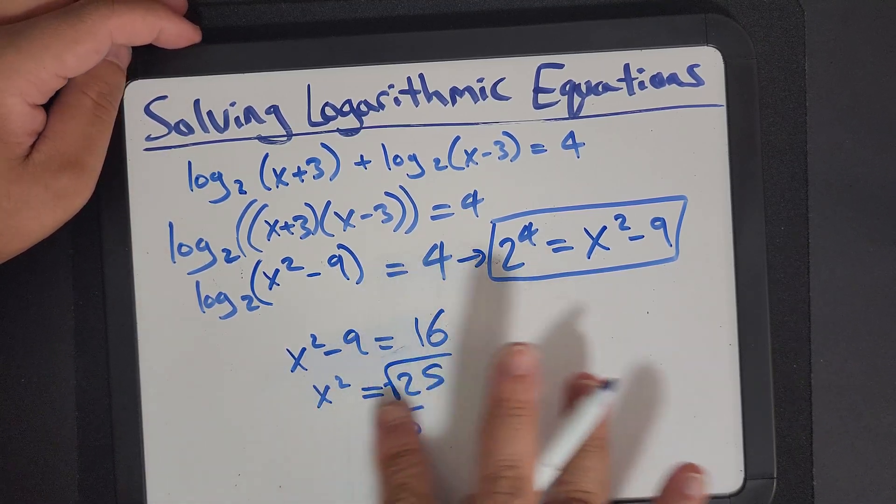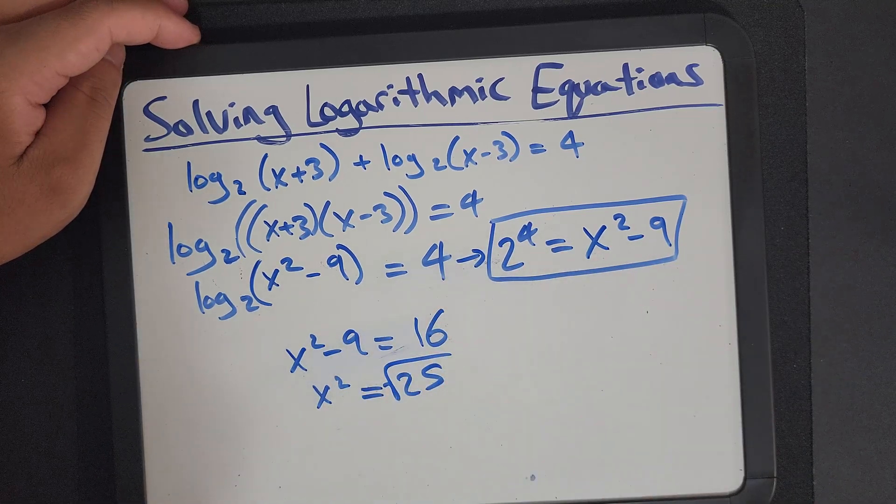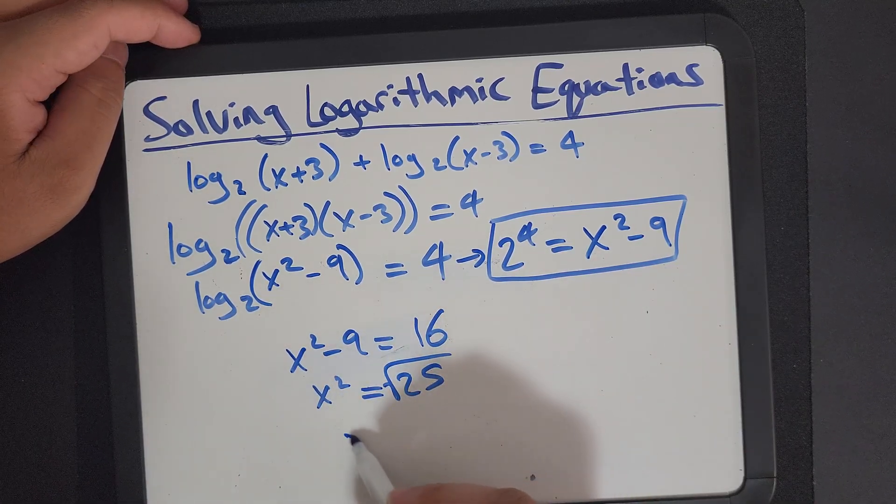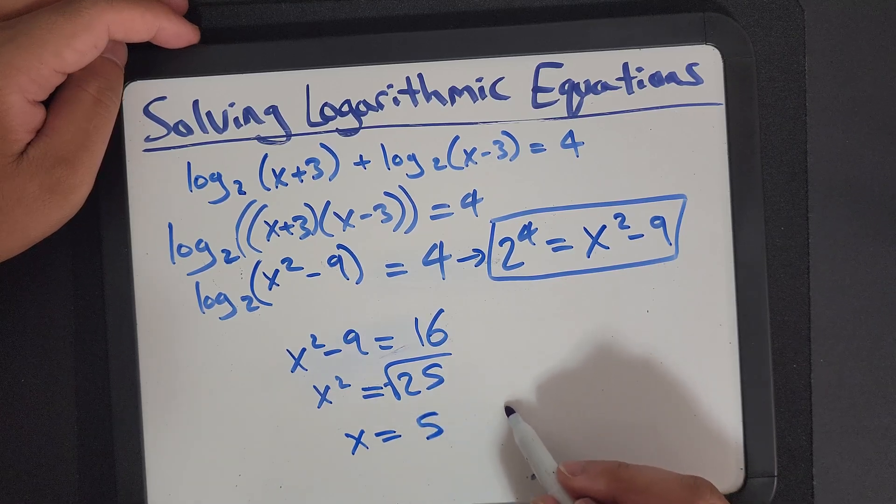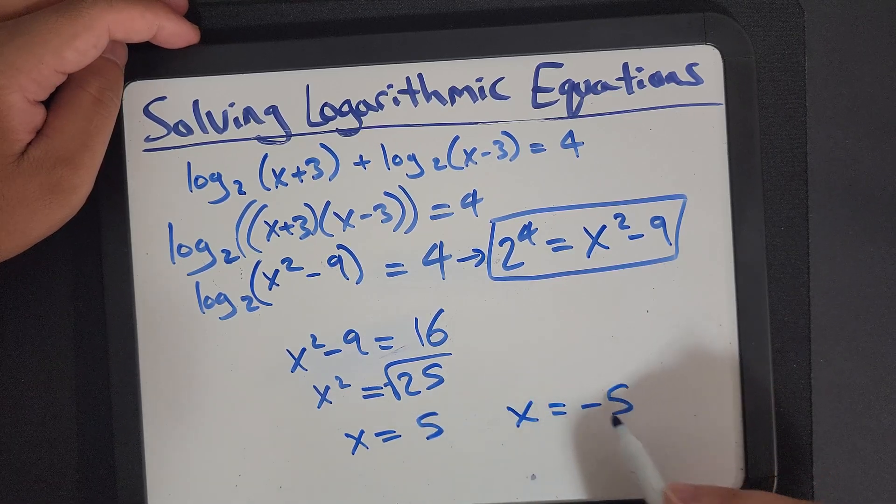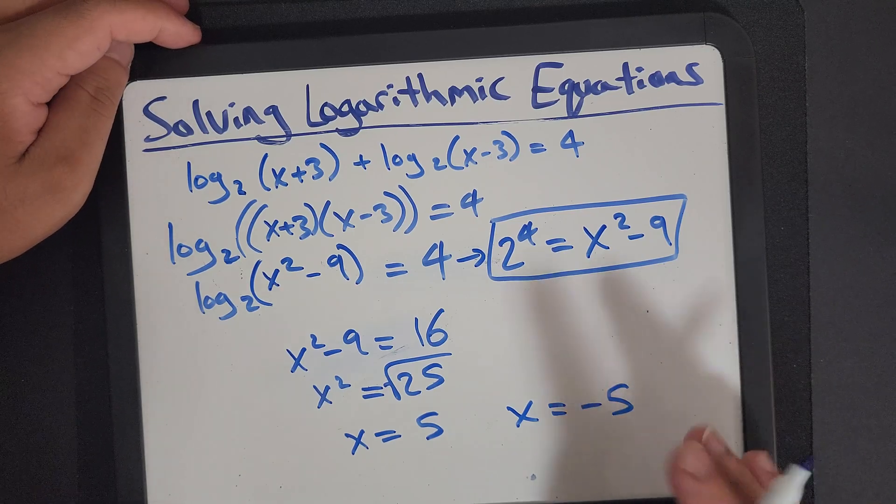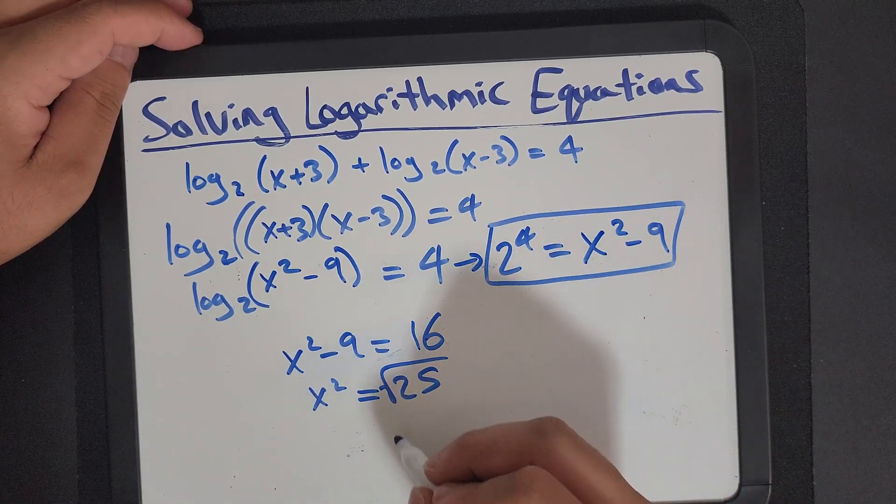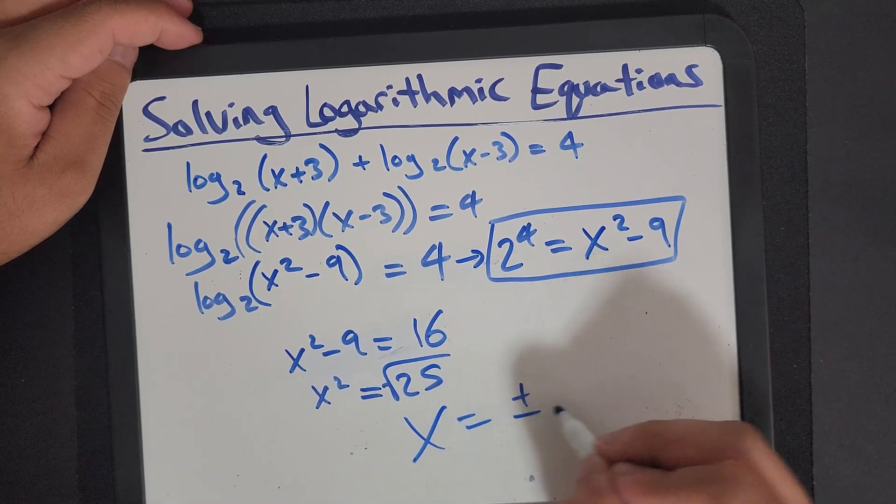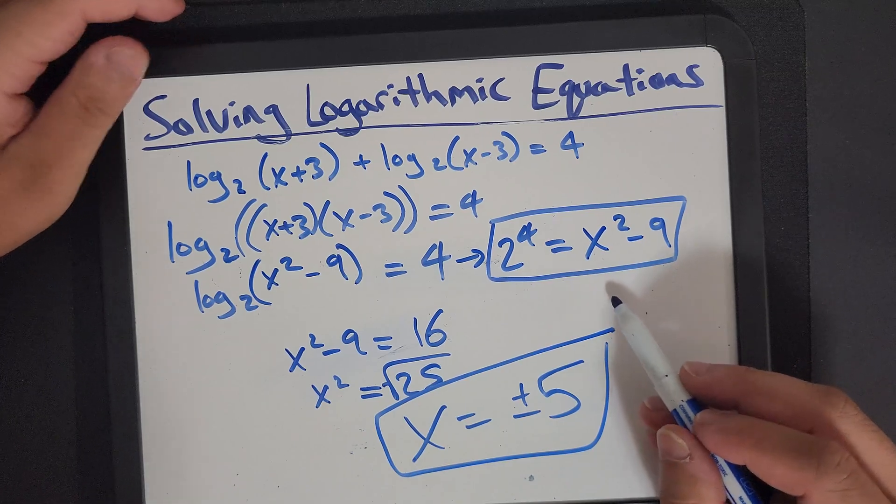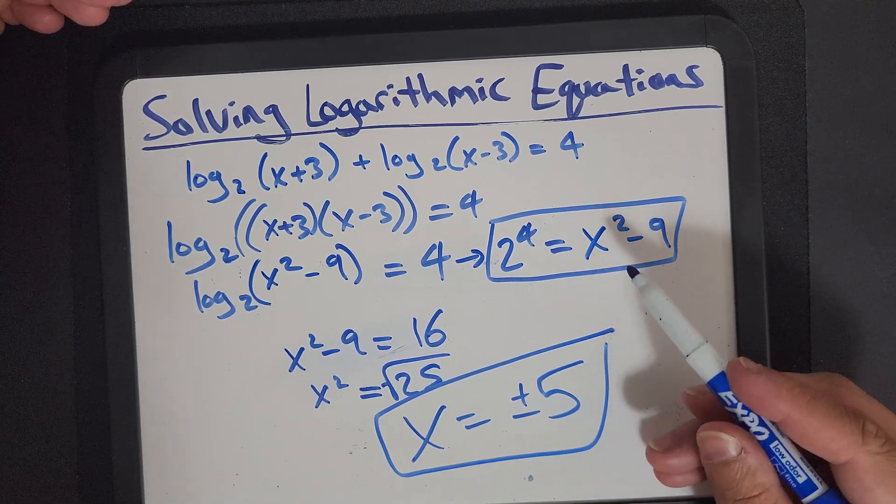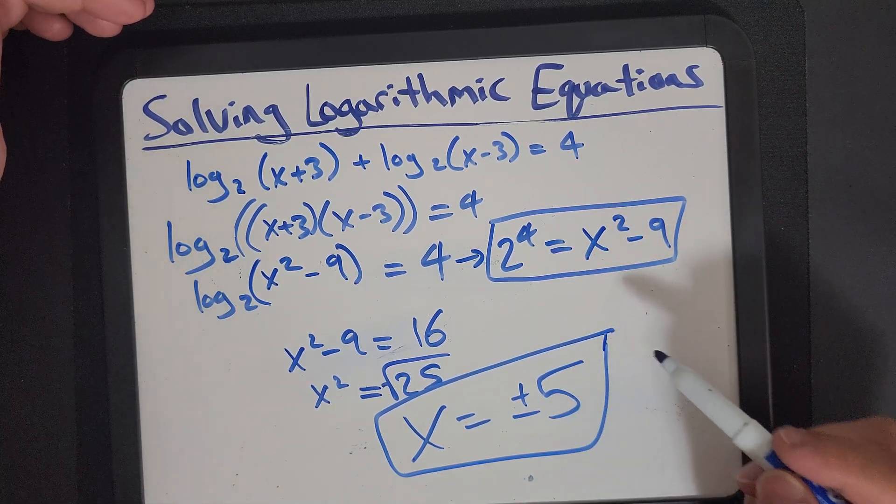Well, when I take the square root of that, I can actually get, I can get x equals 5, or I can get x is equal to negative 5. So I can just write, you know, x is equal to positive or negative 5. And that is how we do the math.